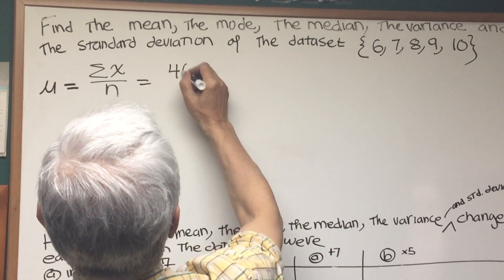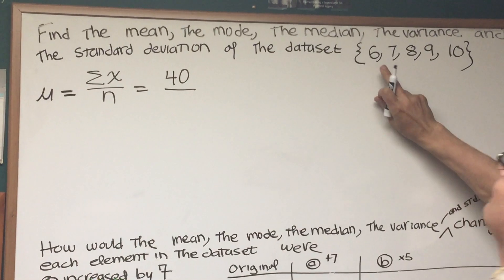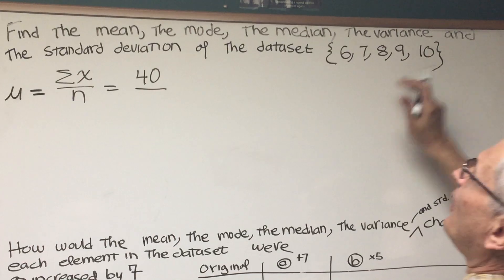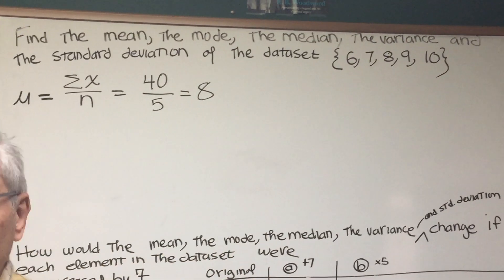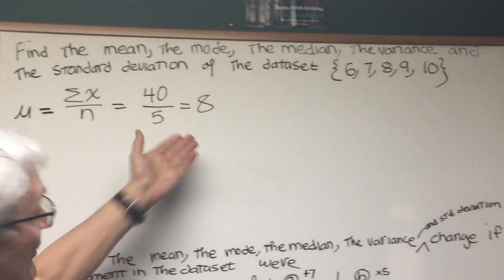So the sum of the scores is 40, and there are 1, 2, 3, 4, 5 scores. There are five scores there. So the mean of this data set is equal to 8. Very straightforward, the arithmetic mean.